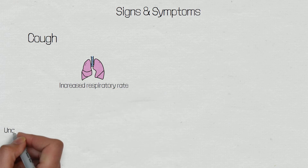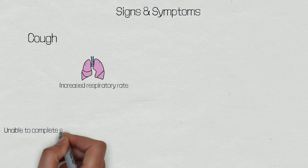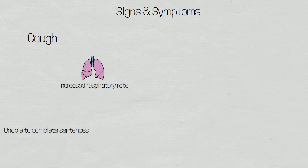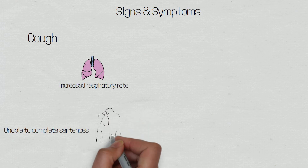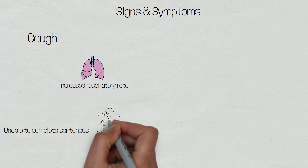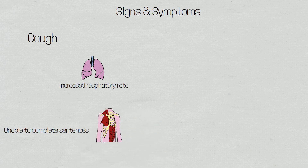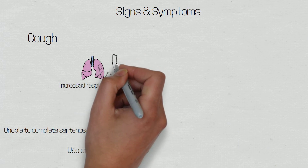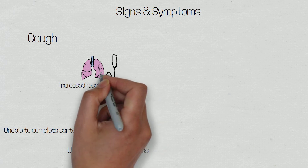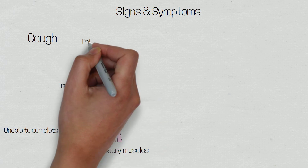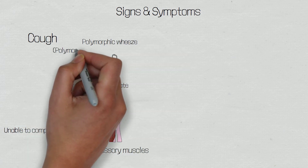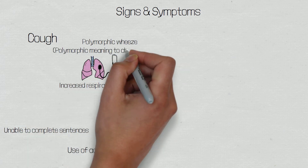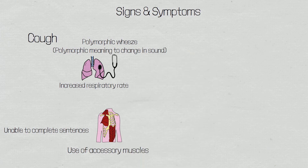They may be unable to speak in full sentences as the demand for air increases. You may see a use of accessory muscles, as the patient tries to recruit more muscles to help with the expulsion of air, which is normally a passive process. On auscultation, you may hear a polymorphic wheeze, especially on exhalation. But as the attack becomes more severe, it may result in an expiratory and inspiratory wheeze. This is due to air travelling at high speeds through narrow airways, similar to a whistling action.